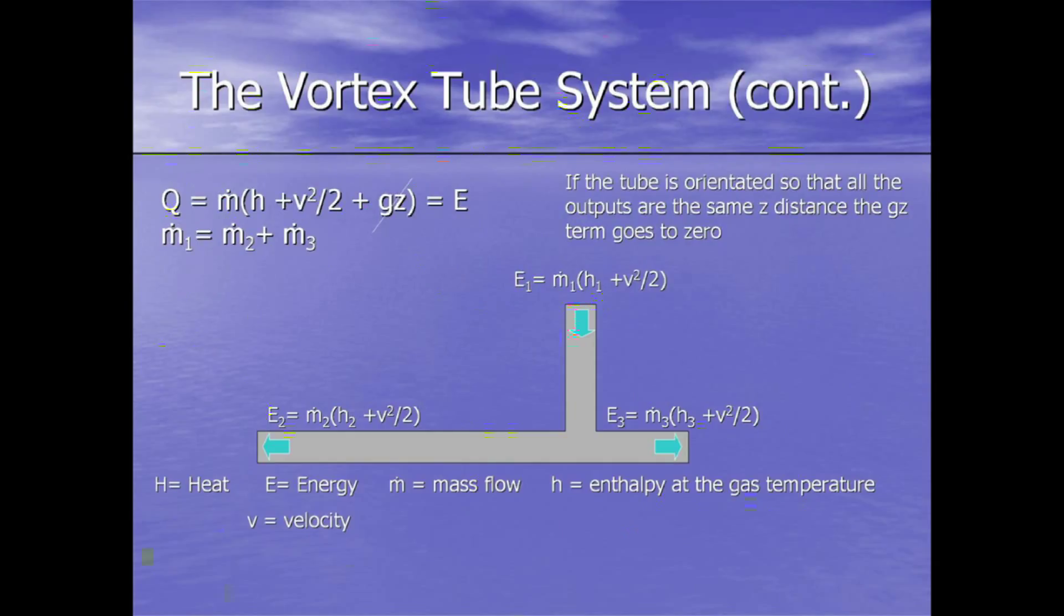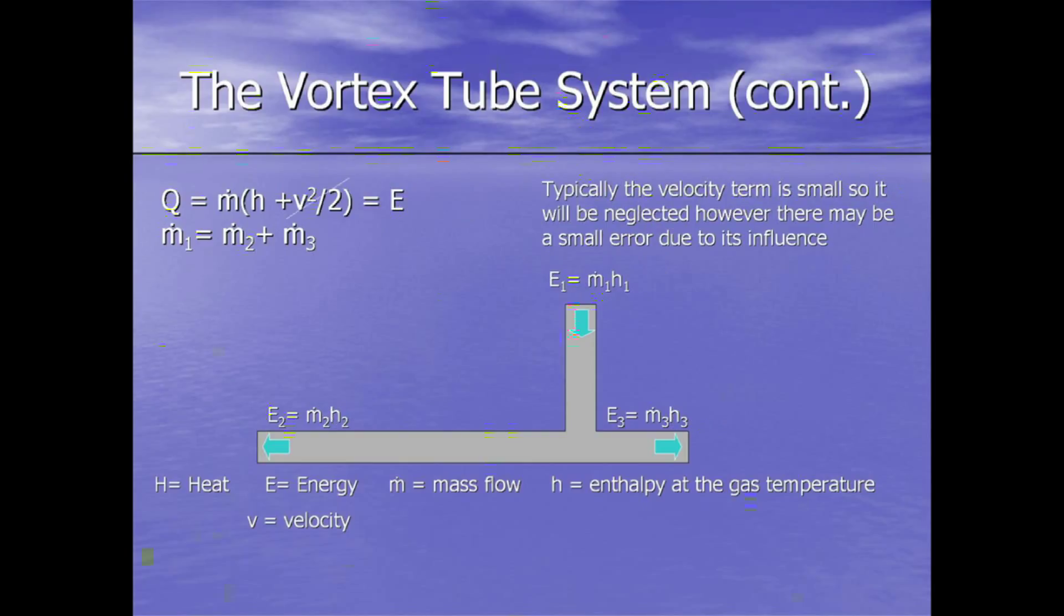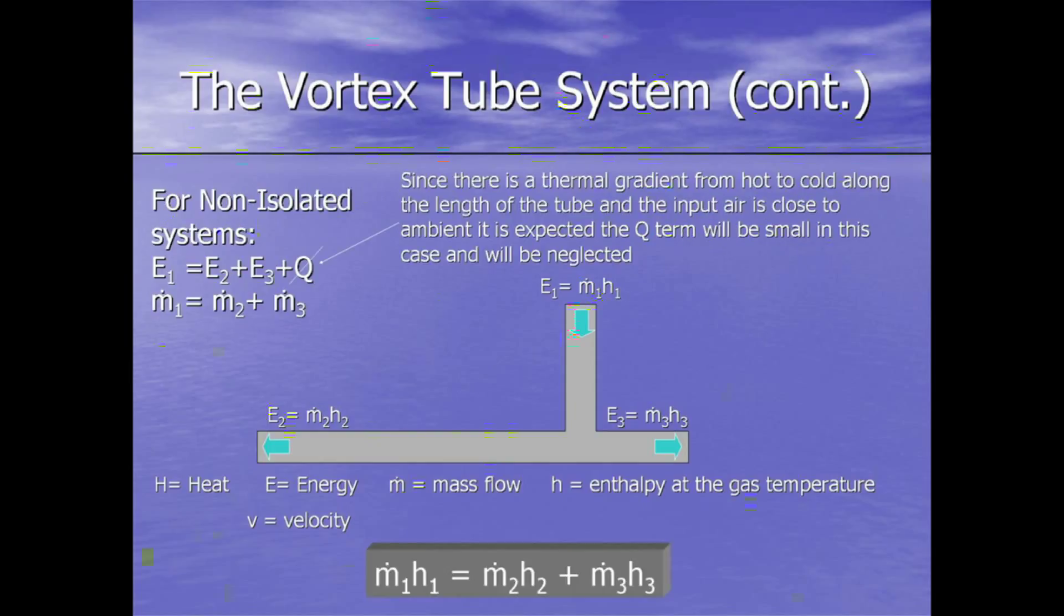The term gravity times Z, if the tube is oriented so that it has the same baseline distance, essentially Z is equal to zero. And since it's zero, then that term goes to zero. Also, the v squared term is usually for these small systems very small and can be neglected. So essentially what we end up with is energy equals ṁh or the enthalpy at the specific temperature.